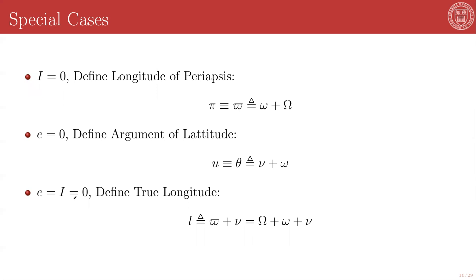And in cases where both of these conditions hold, you can just add all three angles together because they will all be measured in the same plane and there will be no real distinction between them, and define the true longitude, which is typically given by a lowercase l. And that is var pi plus nu, or the sum of all three of these angles.